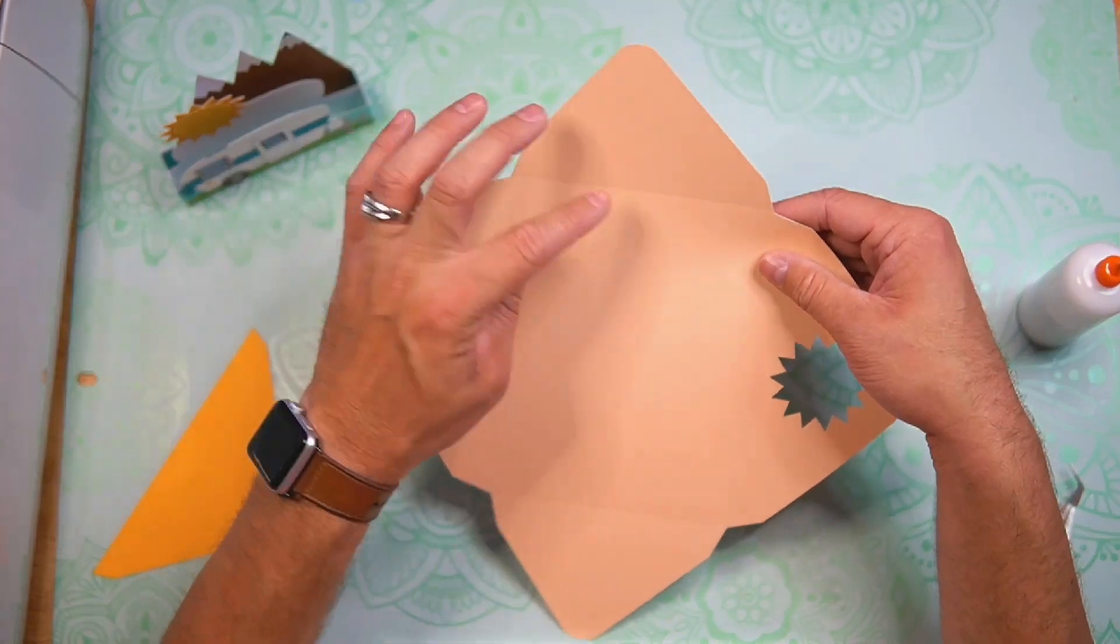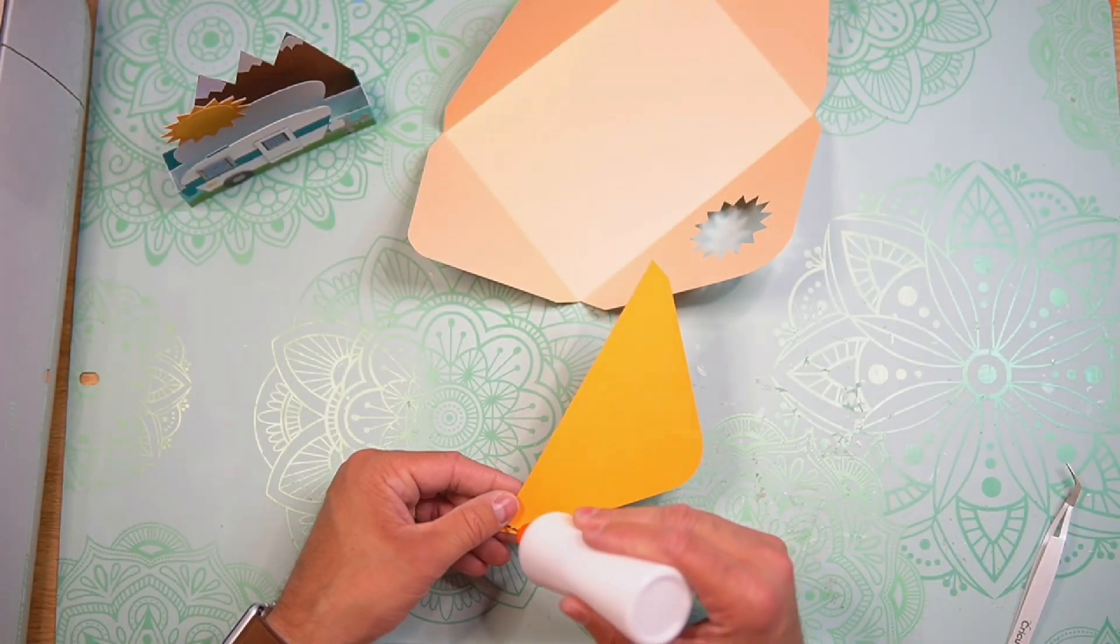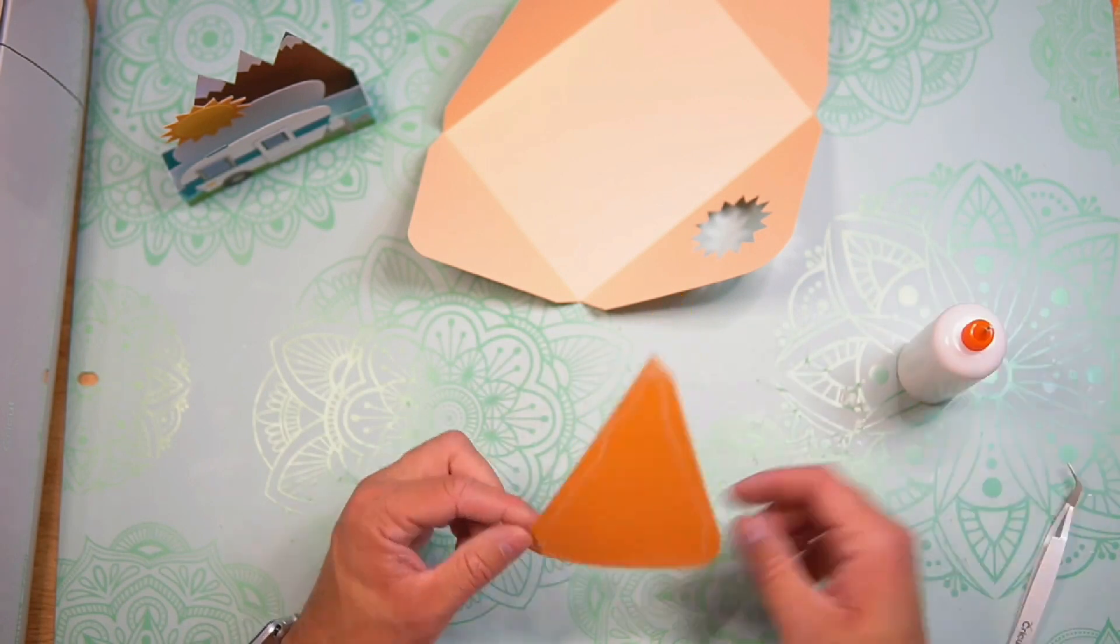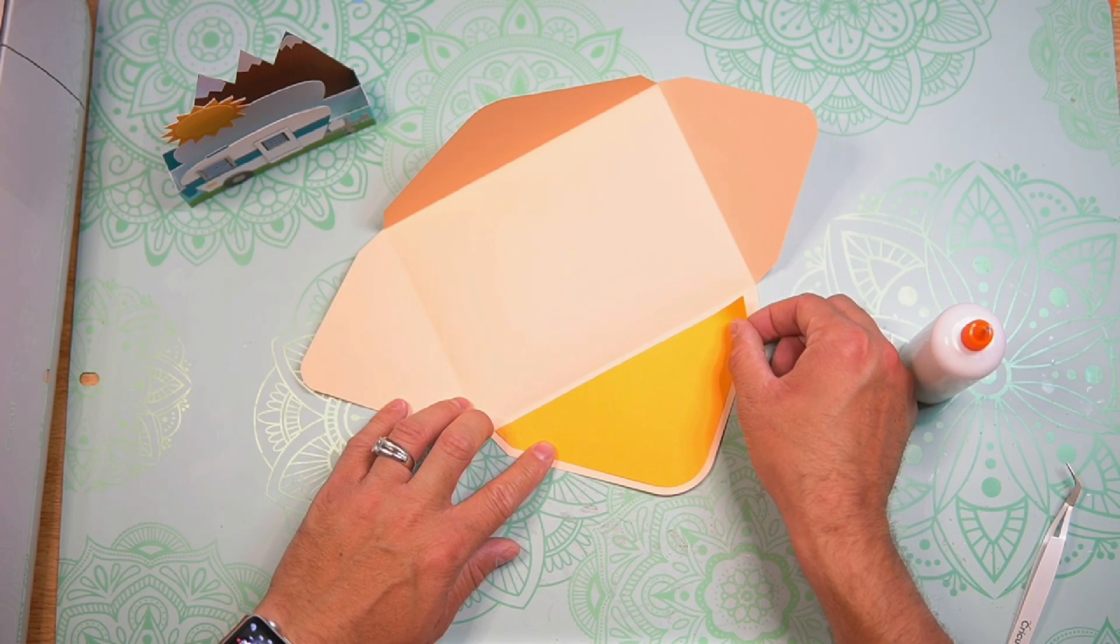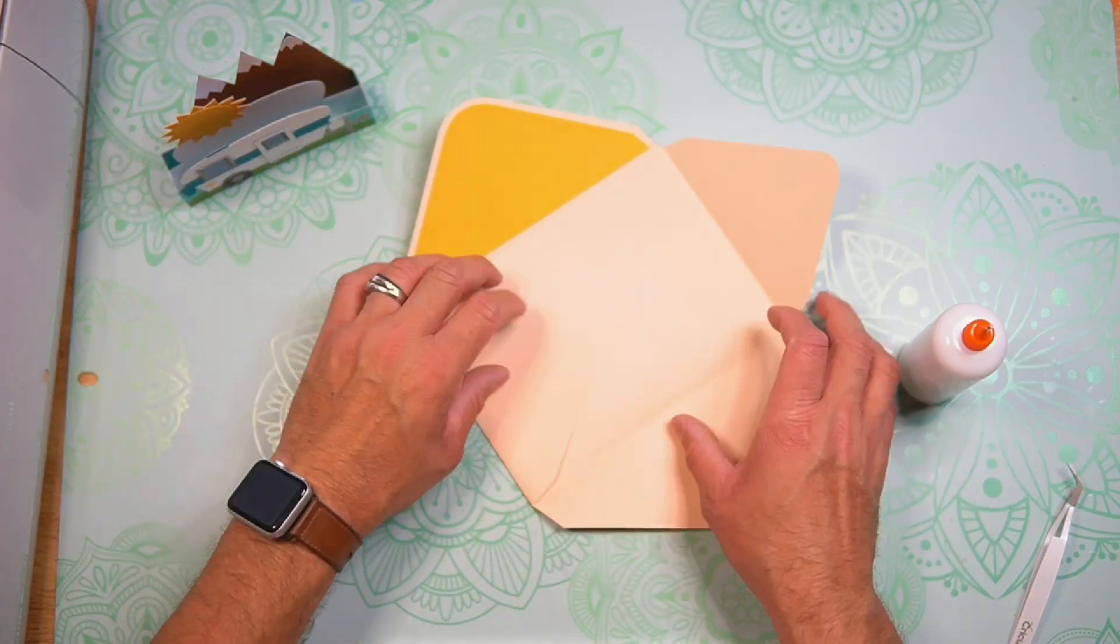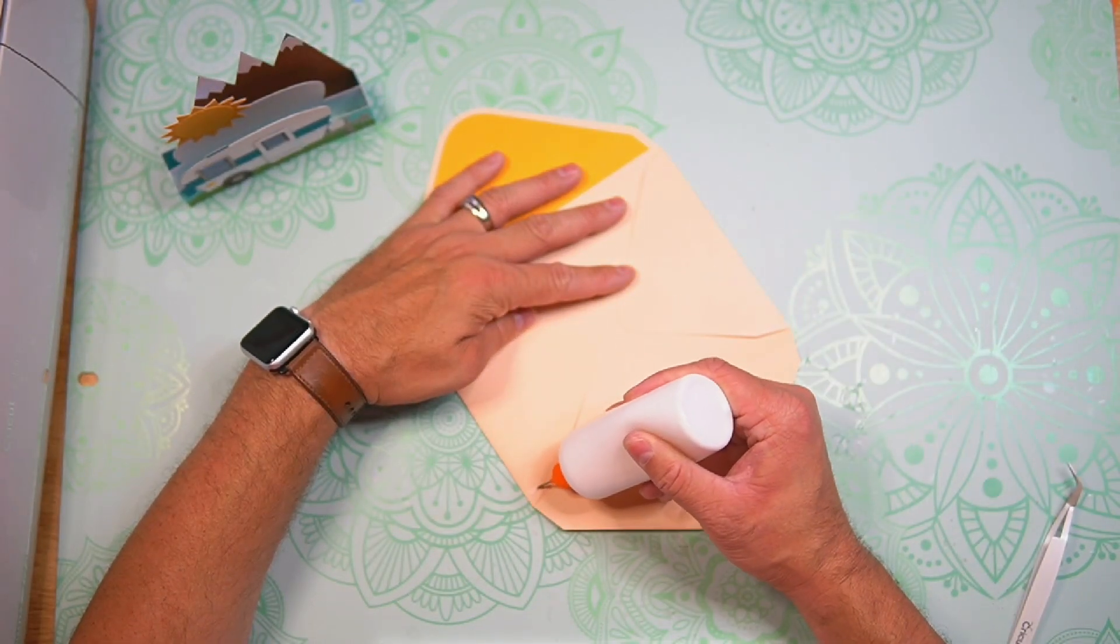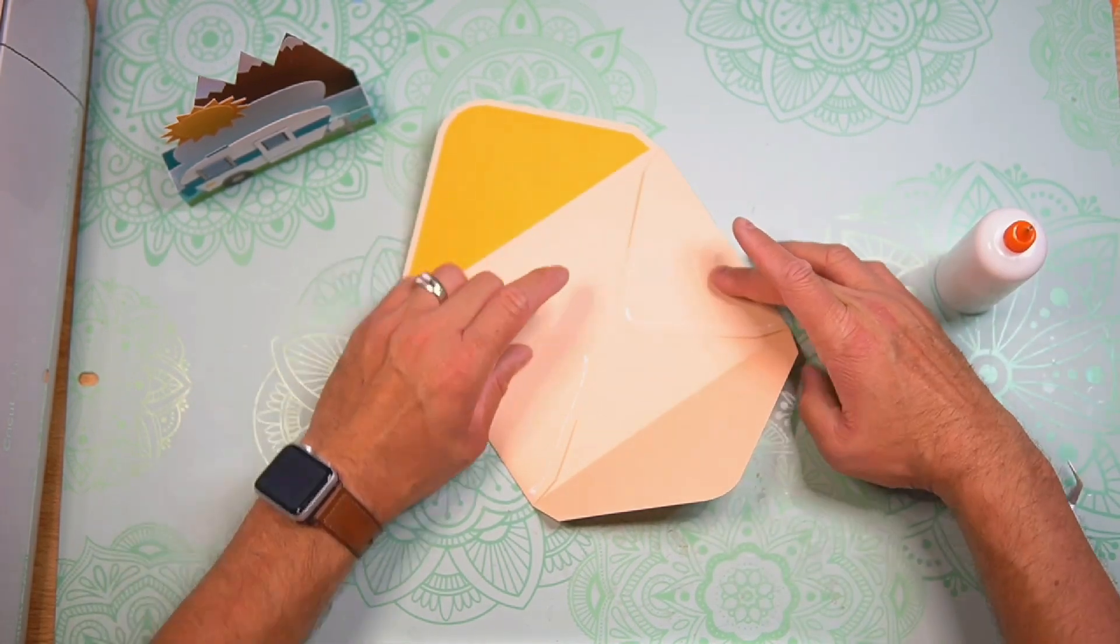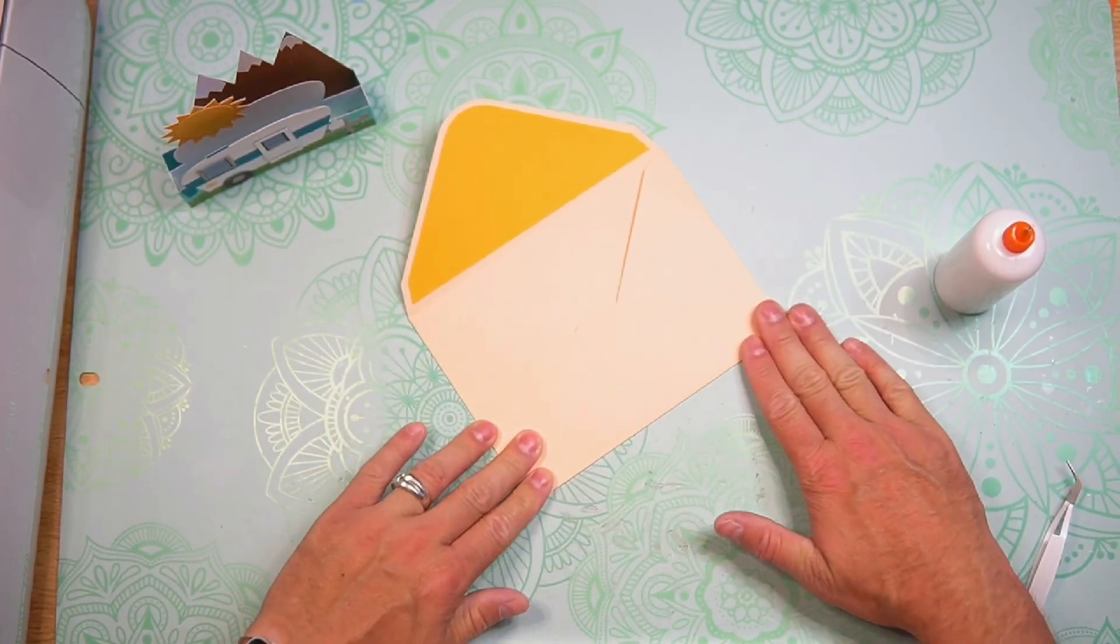So for the envelope, we're just going to go ahead and fold and burnish along the score lines. And now we can take the inlay panel and add glue along the outer edge. And then flip that over and place that onto the envelope. Now rotate the envelope and fold in these side flaps here. And then go ahead and add your adhesive or your glue to the bottom of the side flaps. And then with your thumbs, go ahead and push the bottom flap up. And then that forms our envelope.